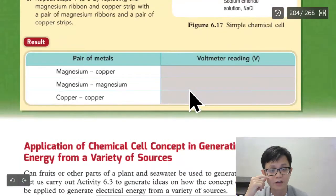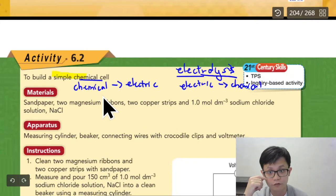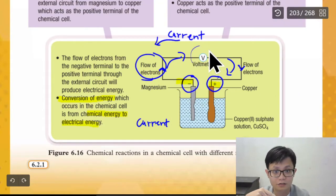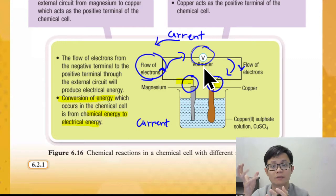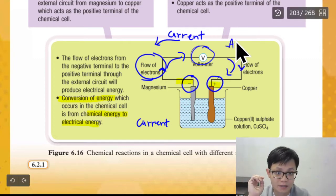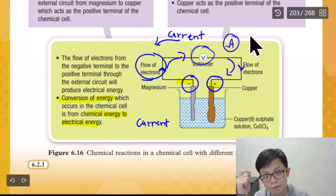When we are talking about simple cell, we are talking about chemical to electric. We can see, usually they put voltmeter in the middle because you cannot see the electric. You need to see, either you want to use voltmeter or ammeter, up to you. Both also can.